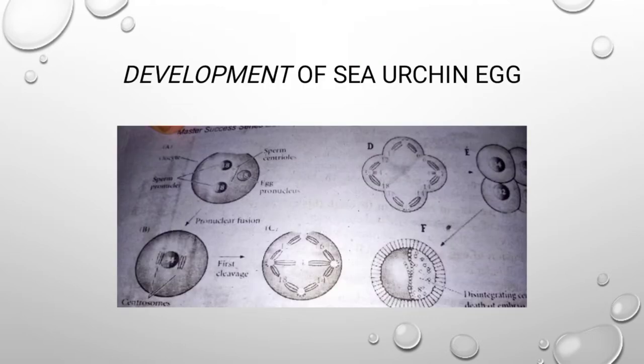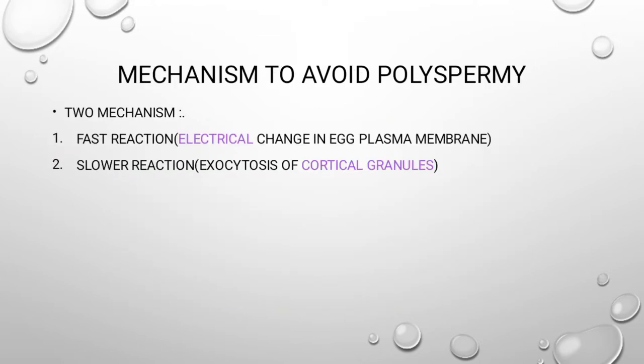With reference to sea urchin, a diagram shows how cleavage is occurring. An important point to remember is that in sea urchin, polyspermy mostly occurs this way.